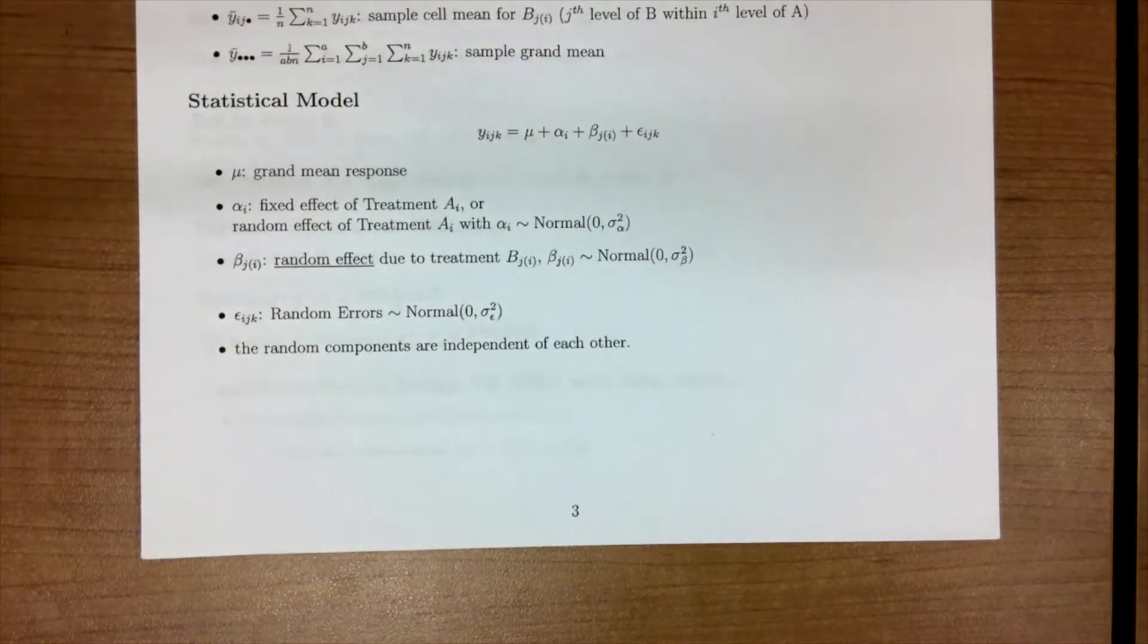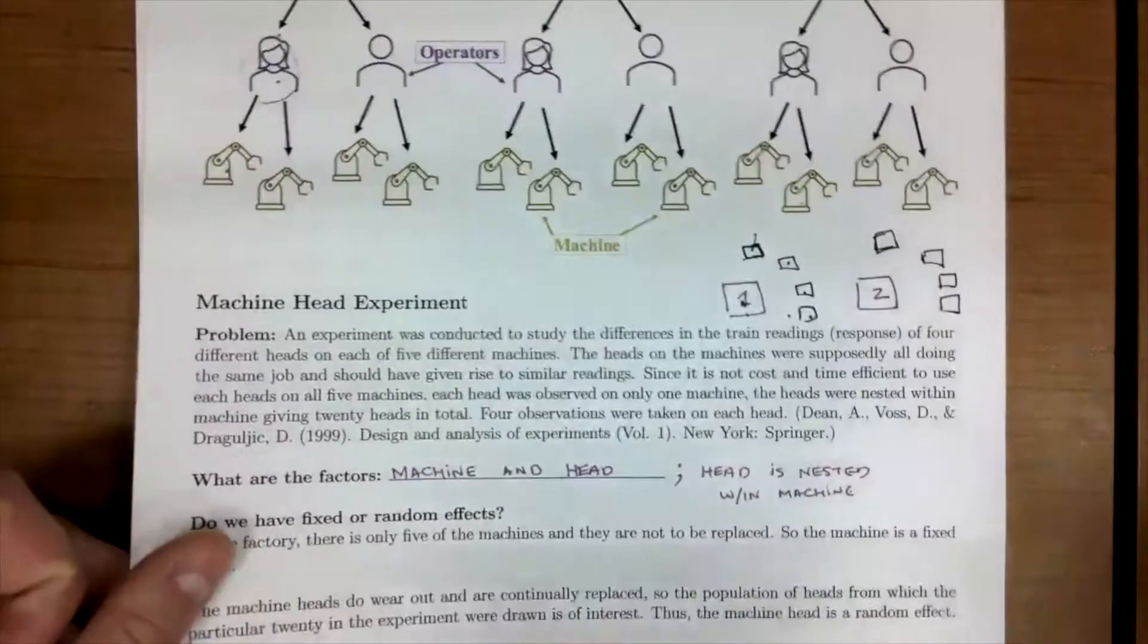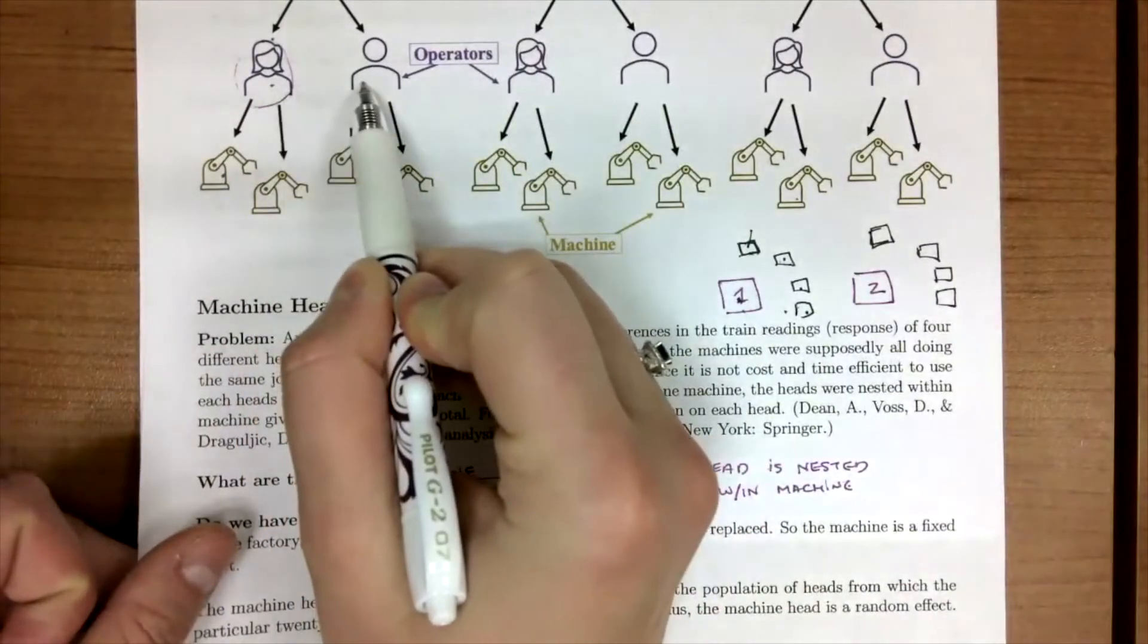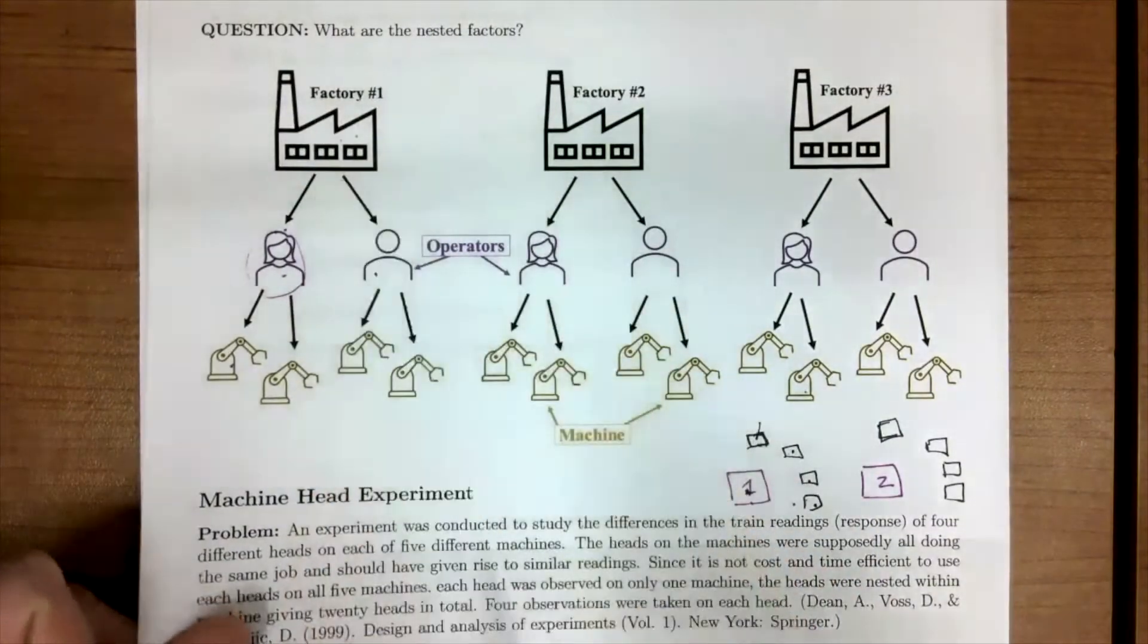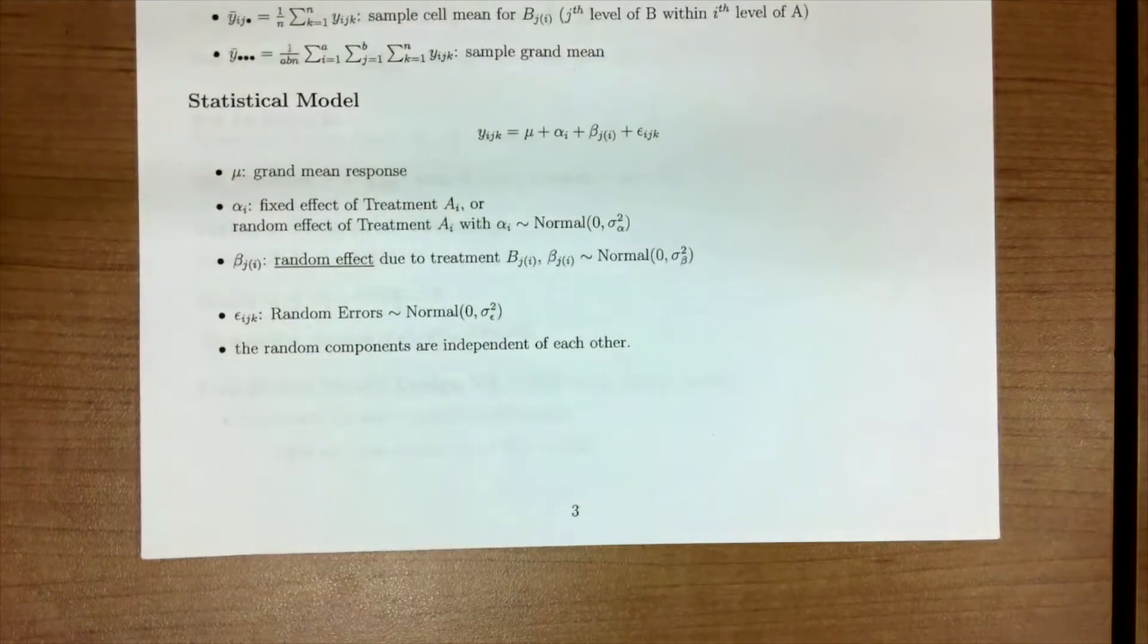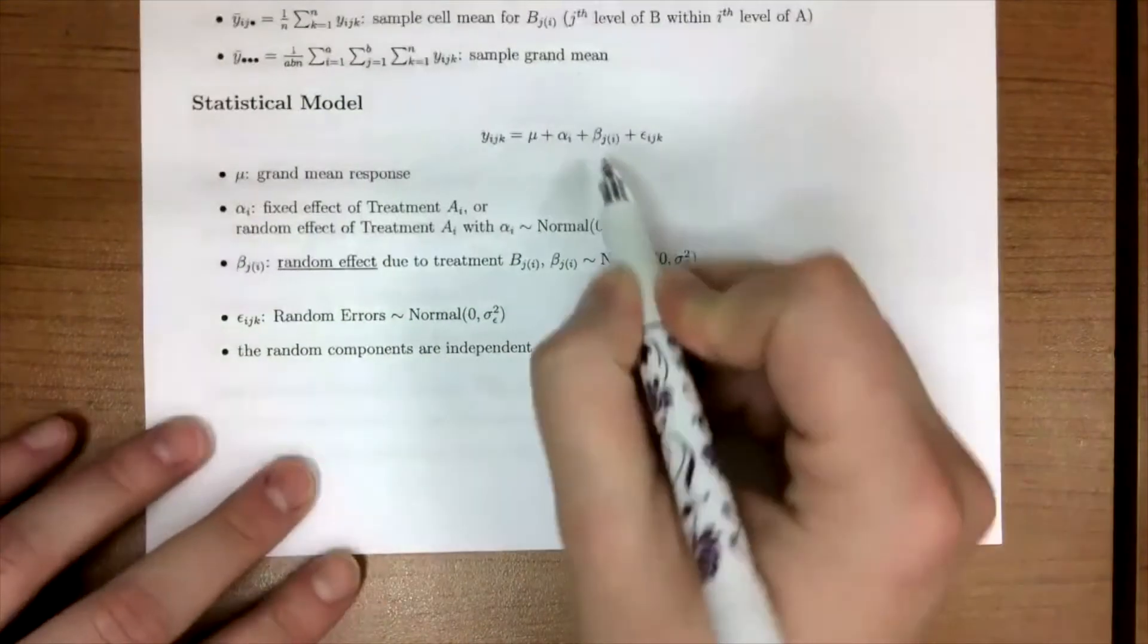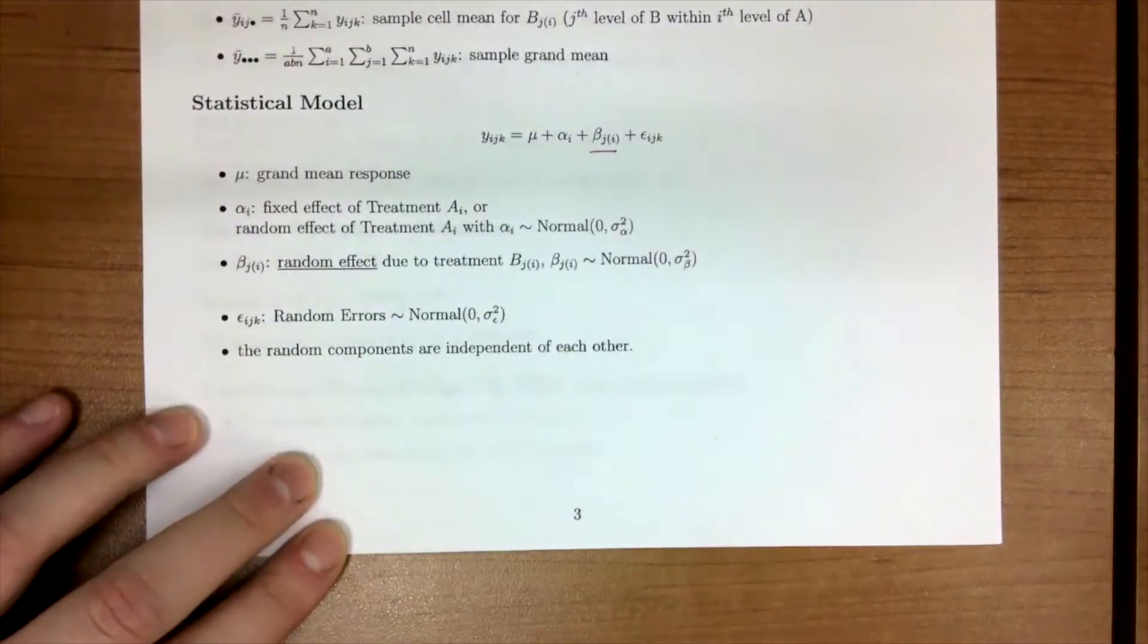That is, if we go back to our plastic example, level B, the operator, depends on what factory we're in. So we don't have an interaction term, but we do have this nested β_{ji}.